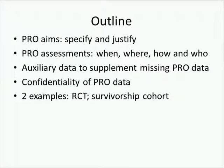Here are the points we will cover in this webinar. I'll start with PRO aims, and I'll touch on why it's so important to be clear in specifying and justifying them. I'll then provide some pointers on things to think about when planning your PRO assessments, in terms of when, where, how, and who to assess. I'll finish by considering the use of auxiliary data — that is, additional to PRO data — to supplement missing PRO data. I'll then hand over to Larry Wenzel, who will explain confidentiality issues in PRO data and present the first of our examples to illustrate how our general points apply to randomized controlled trials. Professor Naughton will then present our second example, illustrating how our general points apply to a survivorship cohort study.